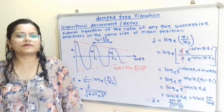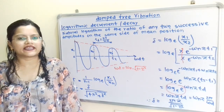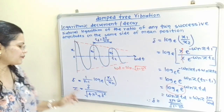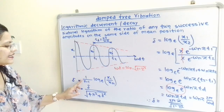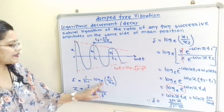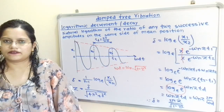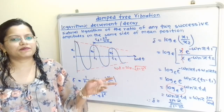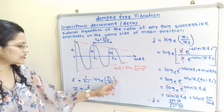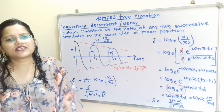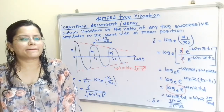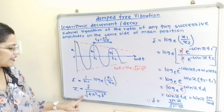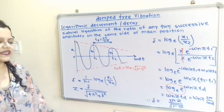If there are n number of amplitudes x1, x2, x3, …, xn, then the logarithmic decrement is: δ = [1/(n−1)] · ln(x1/xn), where n can be any number such as 12, 13, 15, or 20. The relationship between damping factor ζ and δ is: ζ = δ / √(4π² + δ²). These are the important formulas useful to solve problems on damped free vibration.